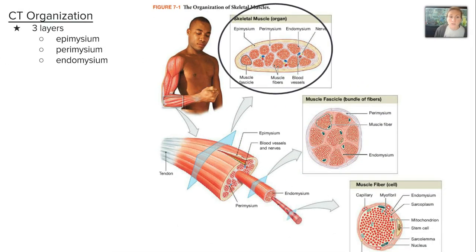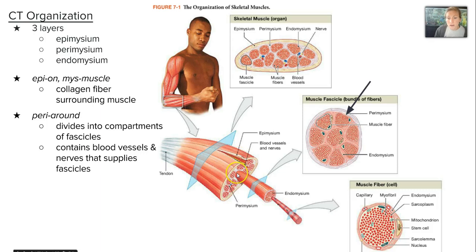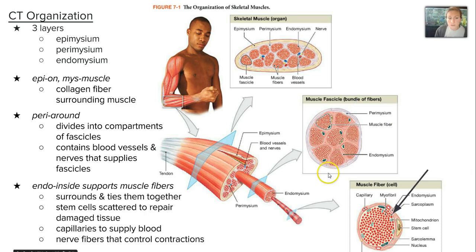The organization of skeletal muscle contains three layers of connective tissue. The epimysium — 'epi' meaning 'on' and 'mys' being muscle — is the surrounding tissue made up of collagen fiber that lines the outside of the muscle. Within each muscle we have fascicles, which are little compartments. The perimysium surrounds these fascicles, which are mostly bundles of fibers, and contains blood vessels and nerves to supply the fascicles. The endomysium is inside and supports the muscle fibers themselves, surrounding and tying them together.